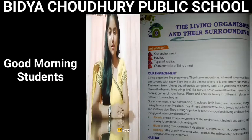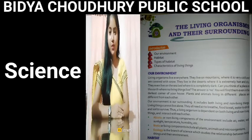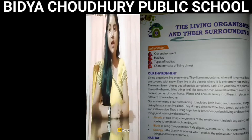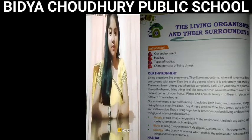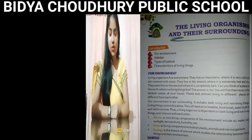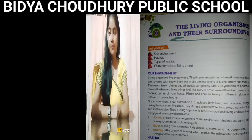Good morning students, welcome back to my science online class. Today we will start a new chapter from your science book — Chapter 9: The Living Organisms and Their Surroundings. Open your books to page number 76. The introduction covers: our environment, habitat, types of habitat, and characteristics of living things.